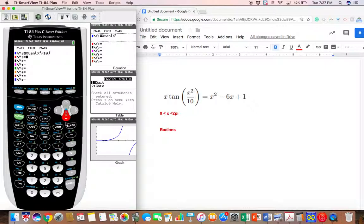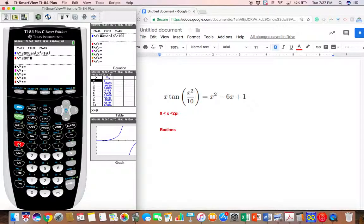Now we can graph the right side in y2. I'm going to use the x squared button: x² - 6x + 1. Let's double check that it's the same: x² - 6x + 1.